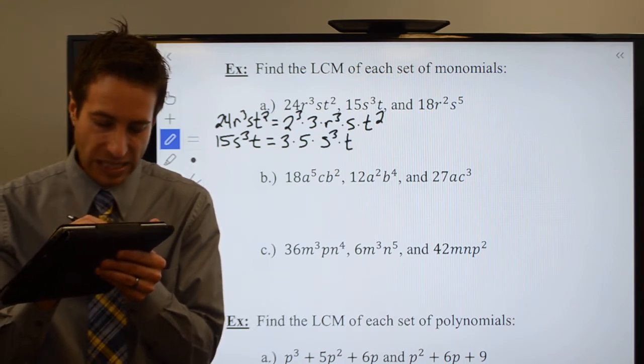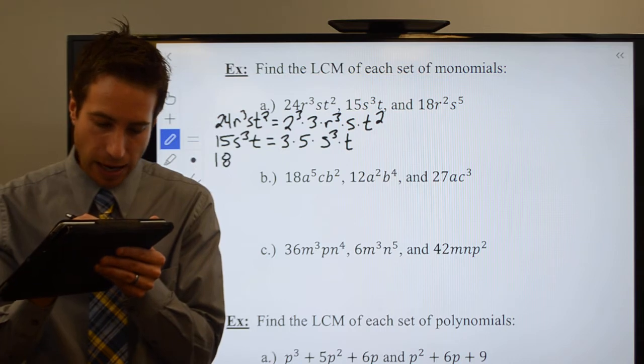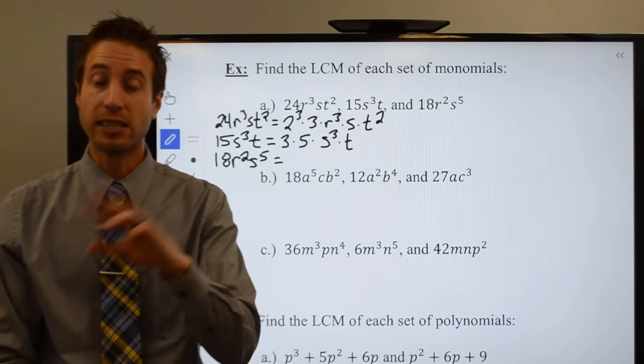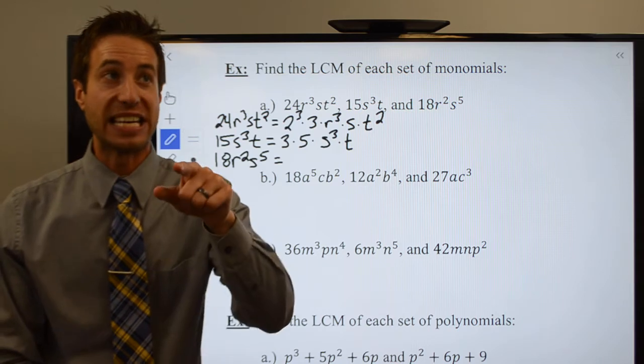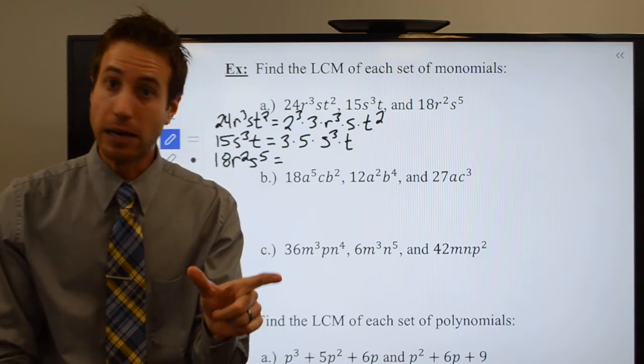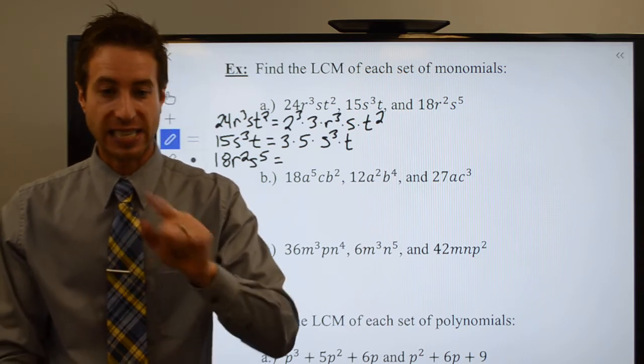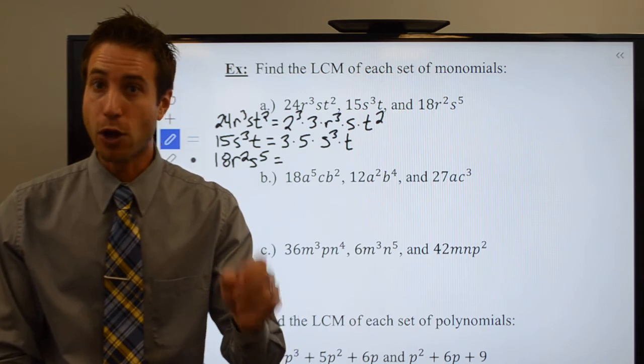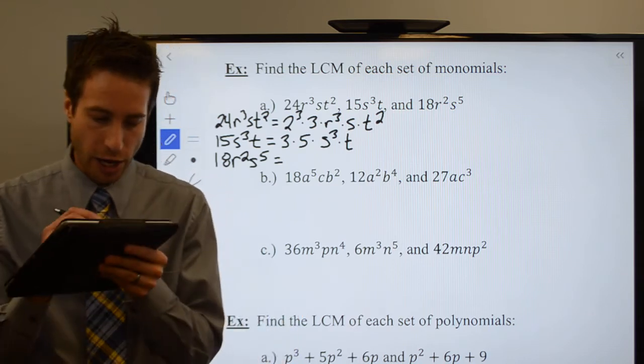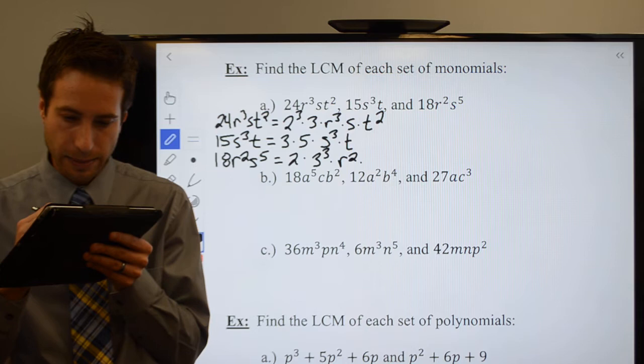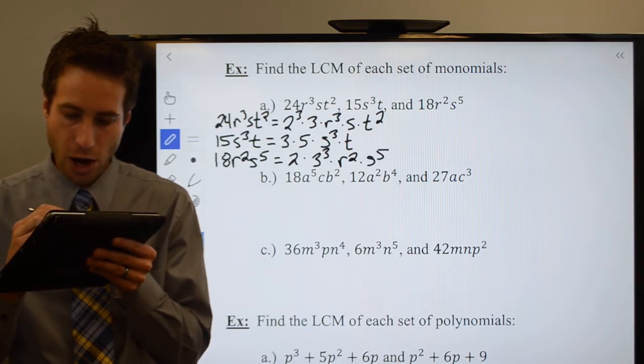18r²s⁵. Well, 18 is 2 times 9, but 9 can be factored into 3 times 3. So if you follow me here, that means you have 2 times 3 times 3, which is 3². So 18r²s⁵ is 2 times 3² times r² times s⁵.